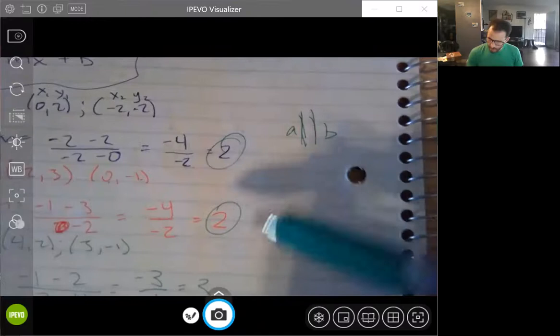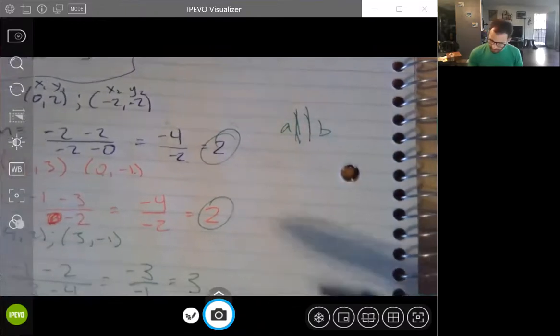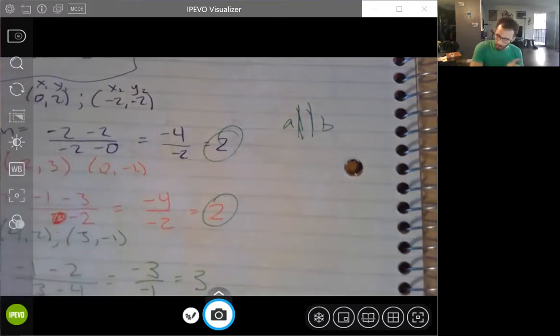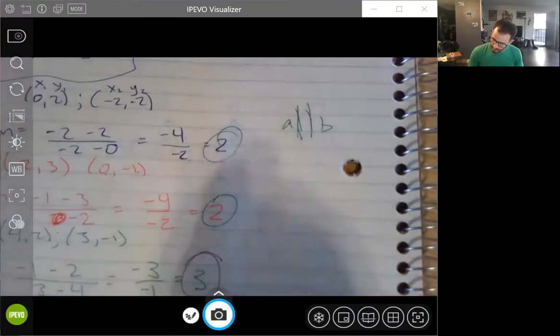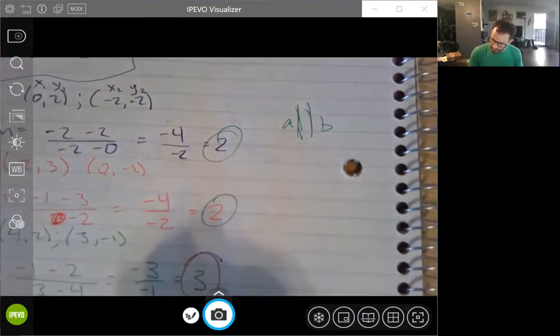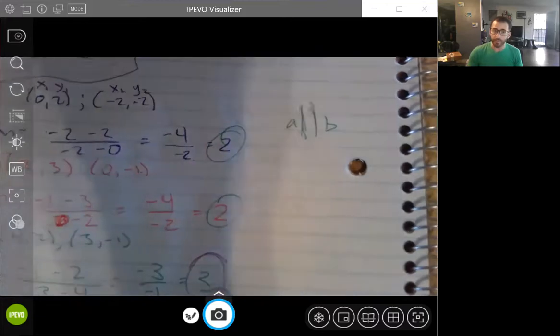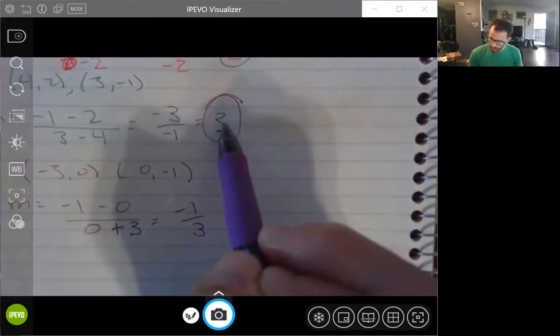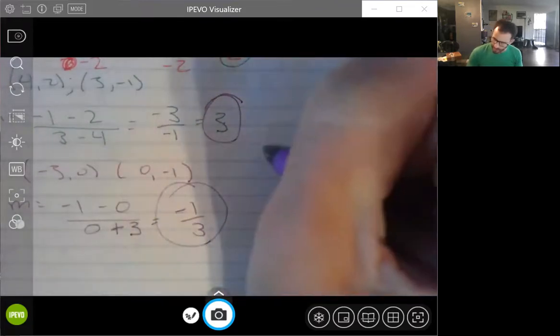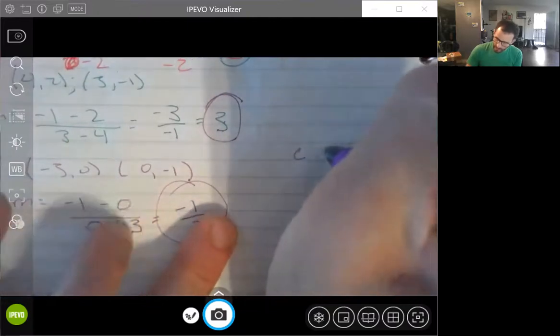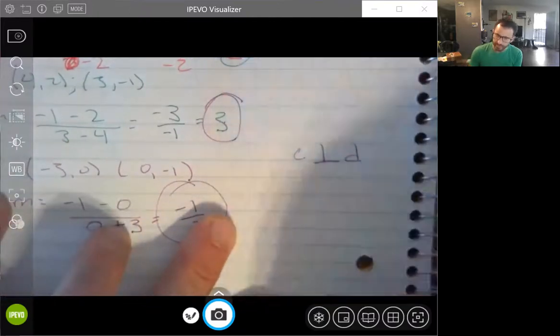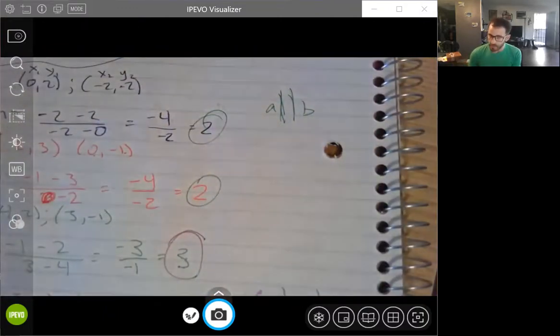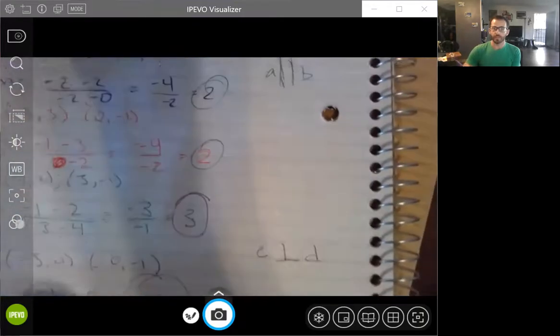All right. Now, opposite reciprocal. Twos and threes and -1/3 have nothing to do with each other. However, 3 and its opposite. So positive 3's opposite is negative. Its reciprocal: 3 over 1's reciprocal is 1 over 3. So -1 over 3. We can say that C is perpendicular to D. So your answer for number 3 is that A is parallel to B. C is perpendicular to D.